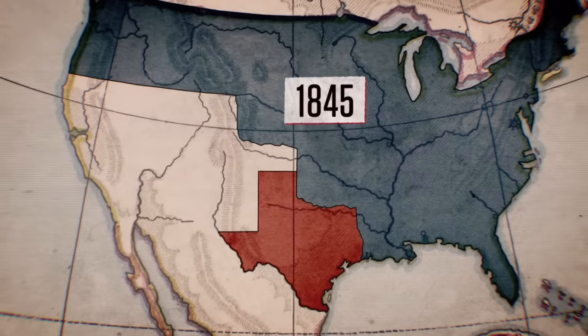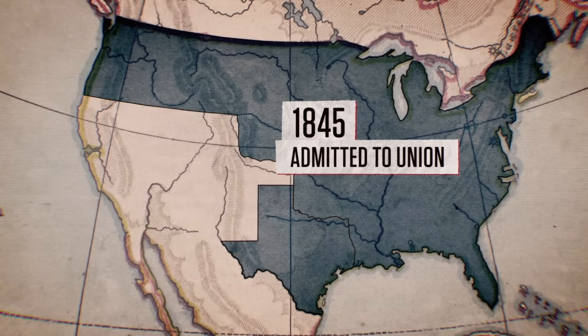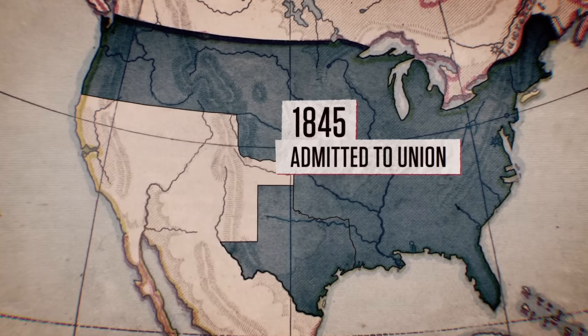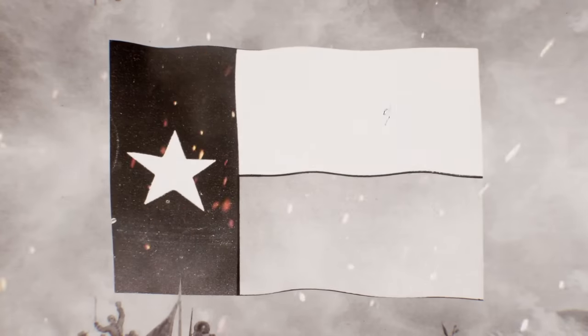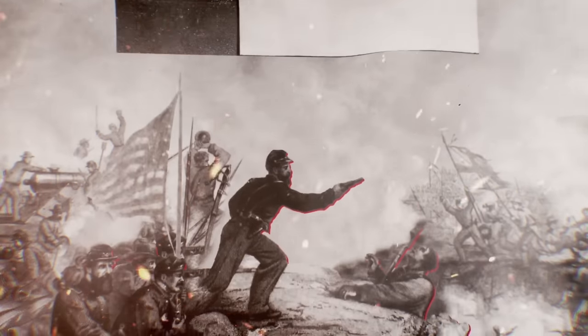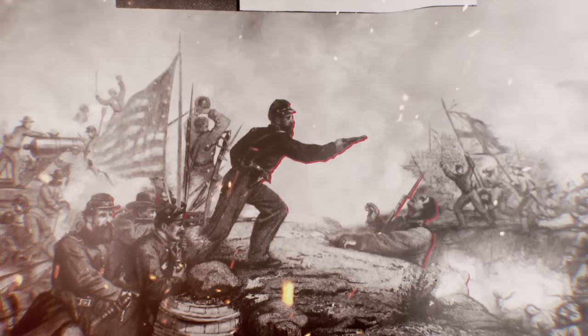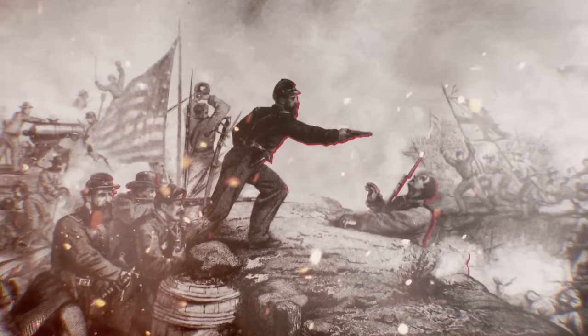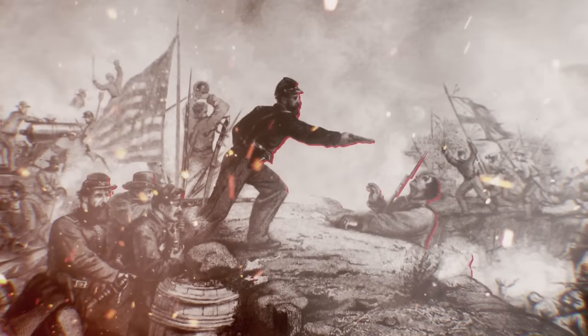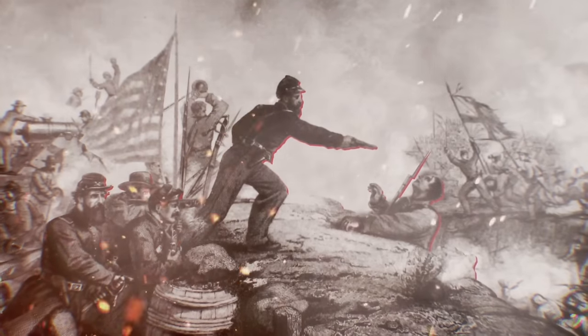Finally, in 1845, Texas was admitted to the Union — but it was short-lived. Fifteen years later, Texas would secede from the US as the country headed towards a civil war over the issue of slavery.